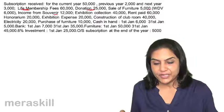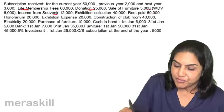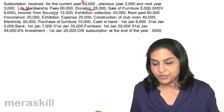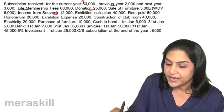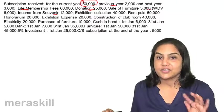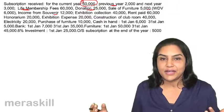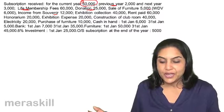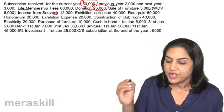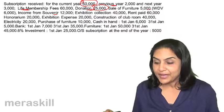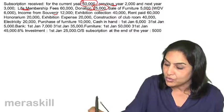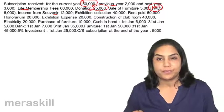Subscription received for the current year is revenue. Previous year subscription should not come in — it relates to another year. Next year subscription is received in advance, so that is like a liability and it should go to the balance sheet. Life membership fees is going to be capitalized. Let us take donation as revenue. Sale of furniture will not come, but there is a loss of 1,000 on furniture, and therefore only that loss should be reflected.